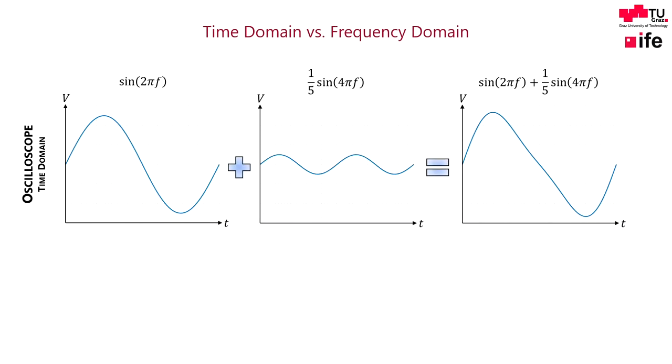A spectrum analyzer is used to analyze signals in respect of their composition of frequencies. As an example, in this slide, two signals are summed up. If one sees only the sum of both signals with an oscilloscope, it is literally impossible to see the composition of all frequencies.